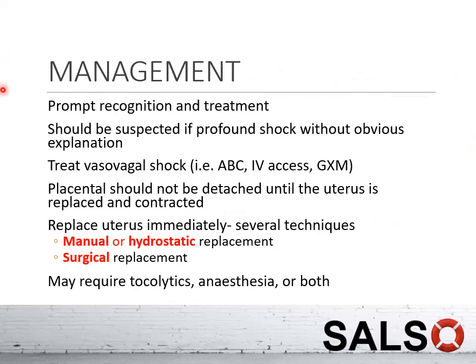Management goes back to resuscitation — recognize the inversion, assess severity, determine whether the patient is in shock, and stabilize by DRS ABC. For uterine inversion, call for red alert, involve senior personnel early, then address Airway, Breathing, and Circulation. Secure IV access and send Group and Cross-Match, because this patient is prone to postpartum hemorrhage.